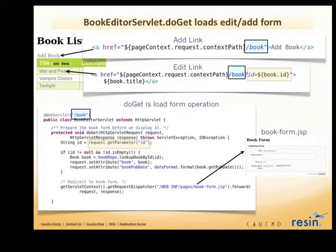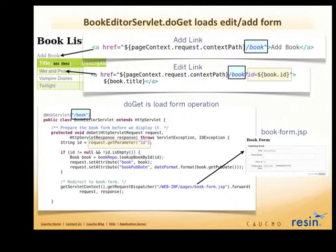So the servlet is the controller. The servlet talks to the model objects — in this case, the repository and the book — puts the model objects in a location where the view can find them, and then delegates to the view to do the actual rendering. That's the classic MVC architecture.